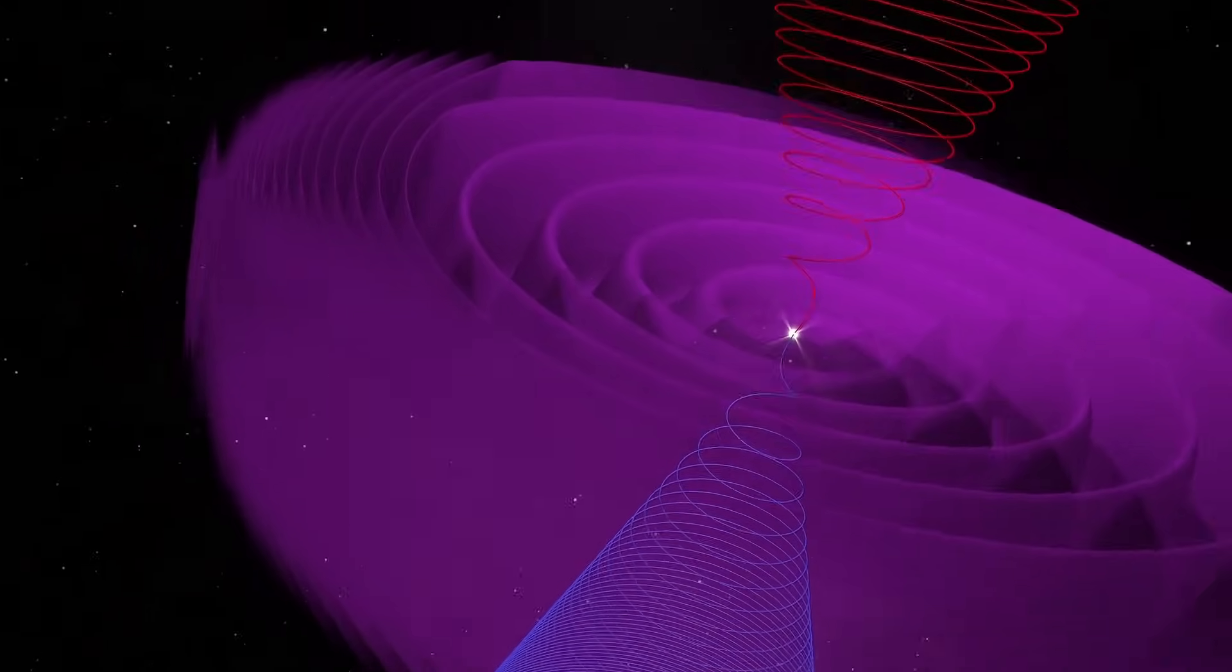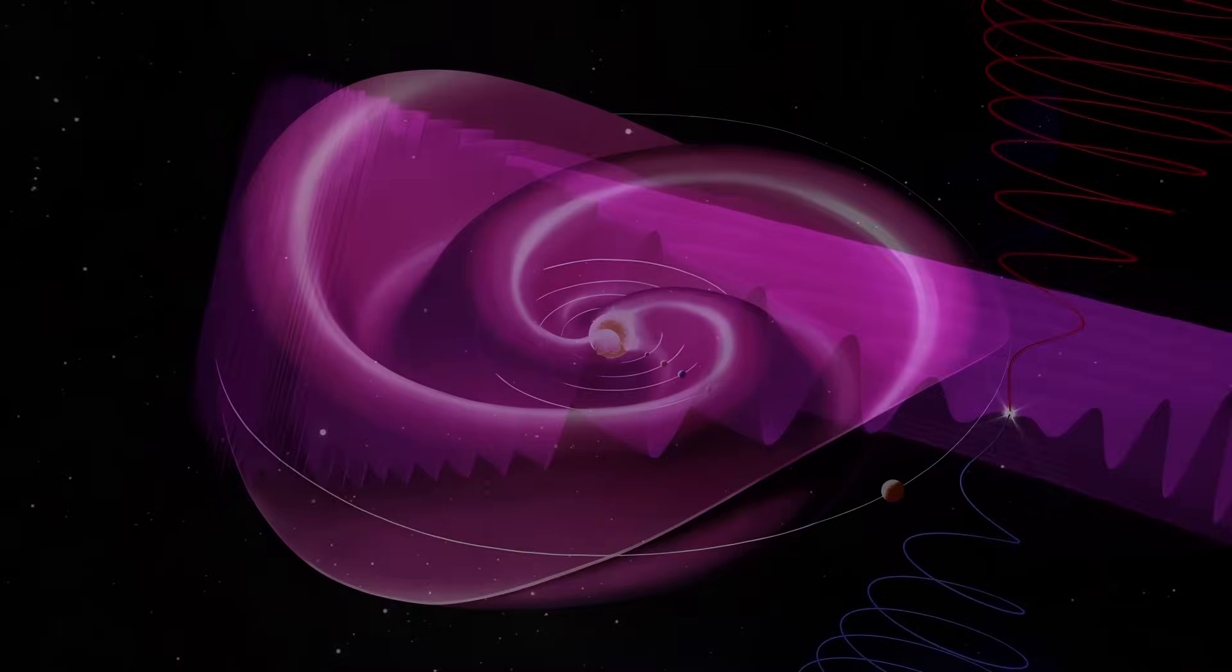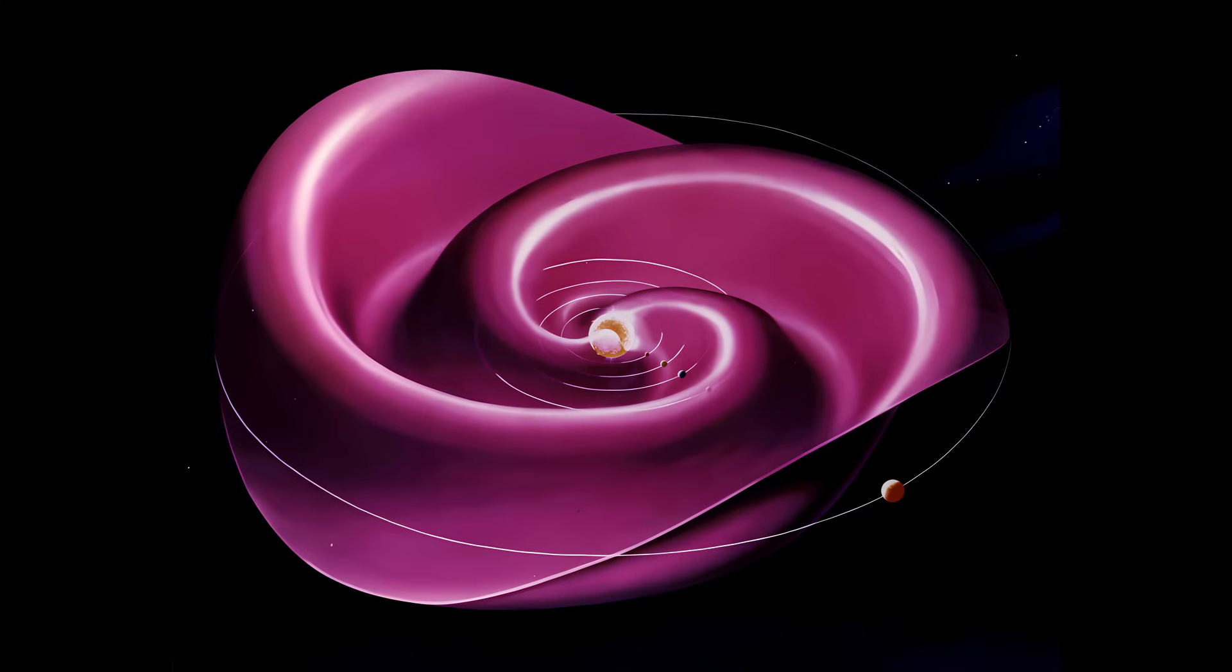The sun's magnetic field undergoes a polarity reversal along a convoluted spiral expanse known as the heliospheric current sheet, extending throughout the solar system and occasionally intersecting Earth's orbit.